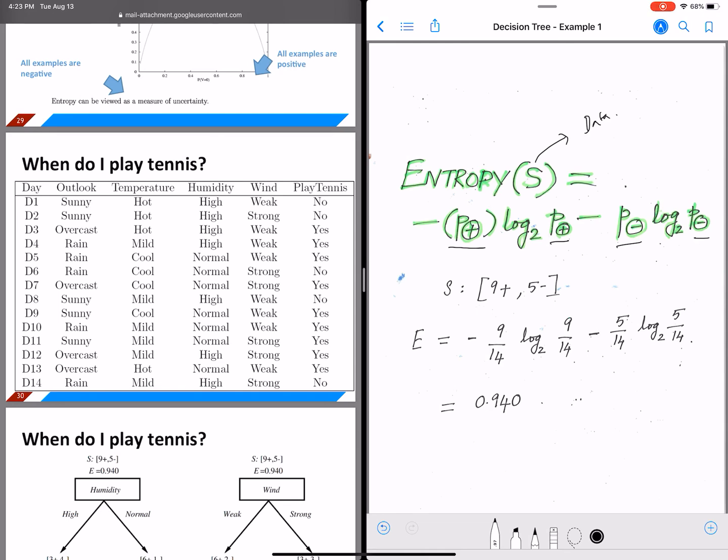So if we count the number of yes in the left, then we have D3, D4, D5, D7, D9, D10, D11, D12, and D13. All these are the positive examples. So there are nine positive examples and five negative examples.